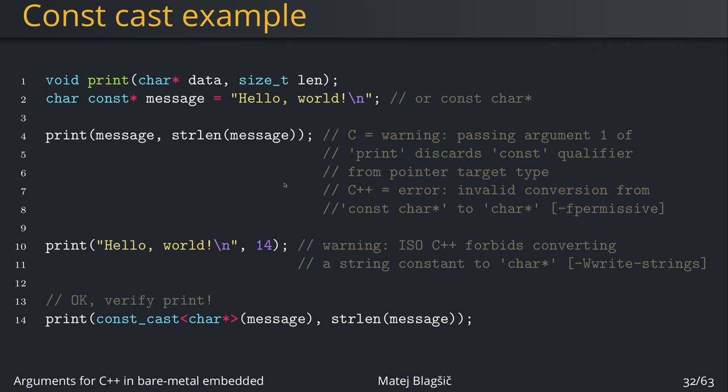That's because string literals like hello world in quotations are stored in read-only memory of your executable. This means that this function can potentially transform the read-only part of your memory, which is undefined behavior. That's why we need to confirm that the function print does not modify our data before we use it with the const_cast. This is omitting the constness of our message variable and the function executes with no problem.